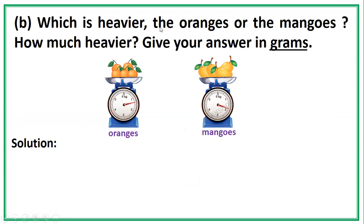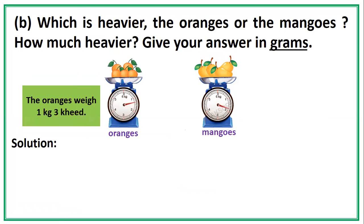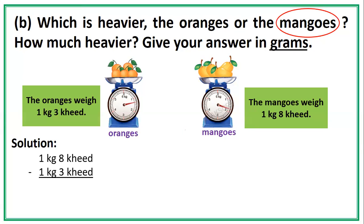For letter B: which is heavier, the oranges or the mangoes? The oranges weigh 1 kilogram and 3 hecto, and the mangoes weigh 1 kilogram and 8 hecto, so the mangoes are heavier. How much heavier? The solution: 1 kilogram 8 hecto minus 1 kilogram 3 hecto equals 5 hecto.